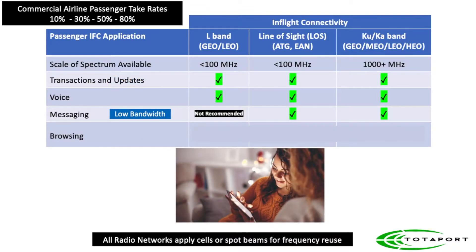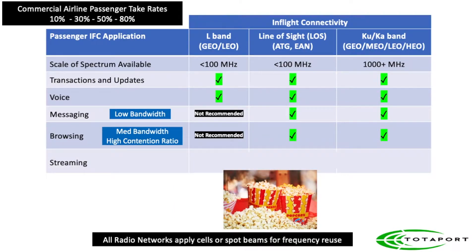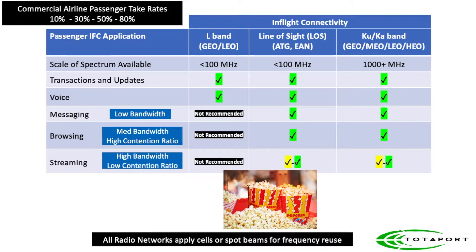Browsing is a medium-bandwidth service, and the good news is the quality of experience can support high contention ratios. A streaming service for movies or television is both a high-bandwidth service and requires a low contention ratio, which can lead to congestion in most networks some of the time.